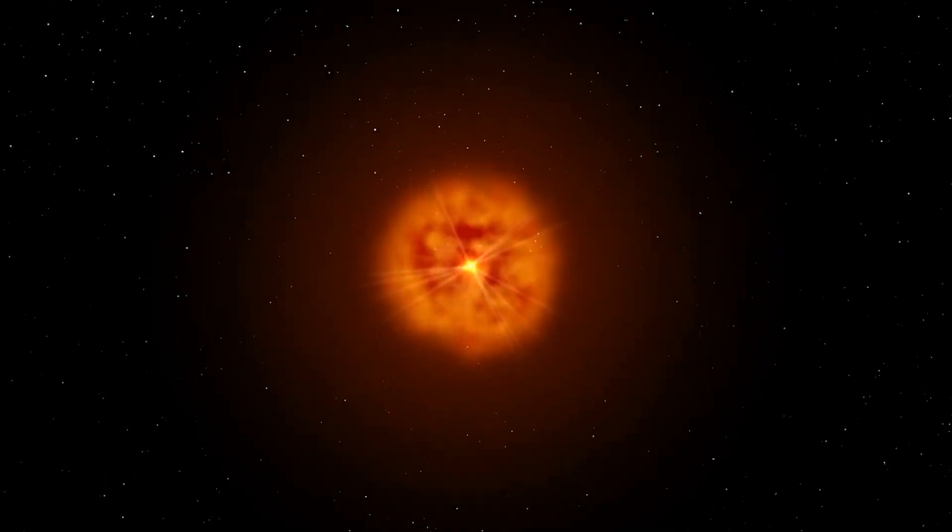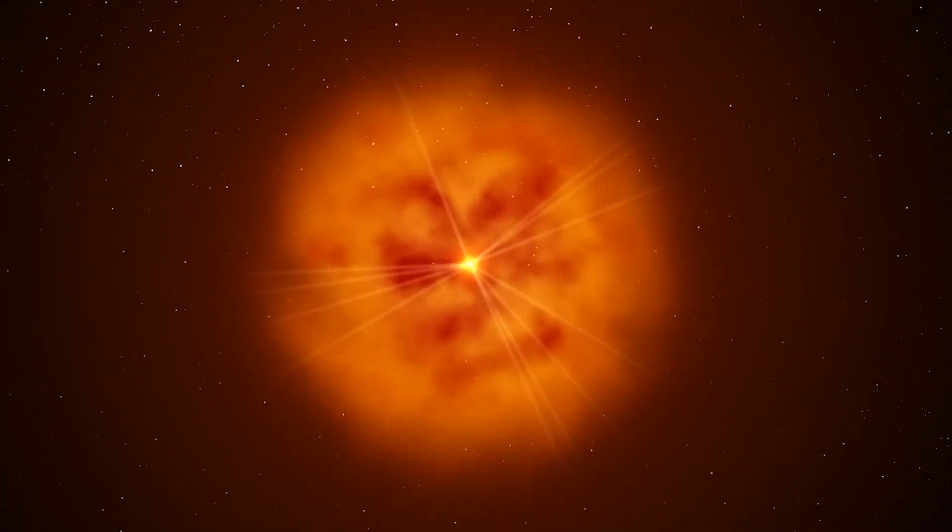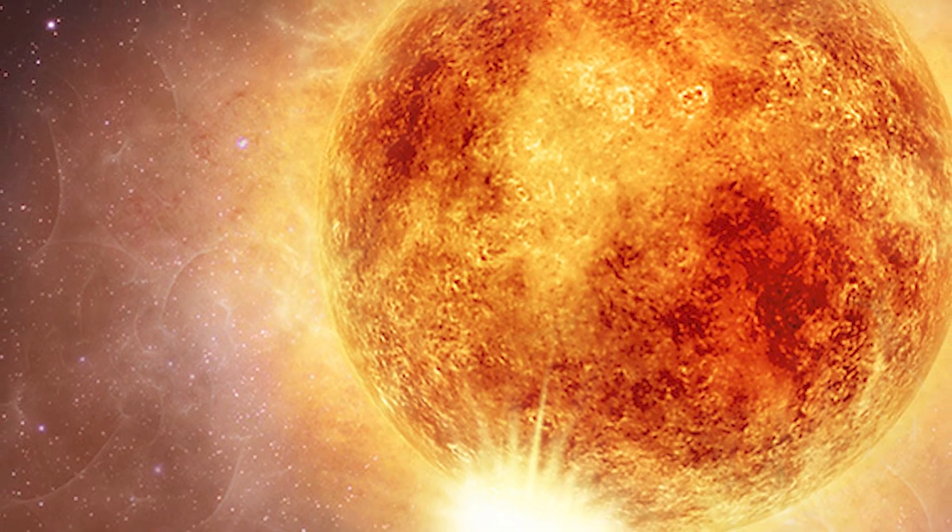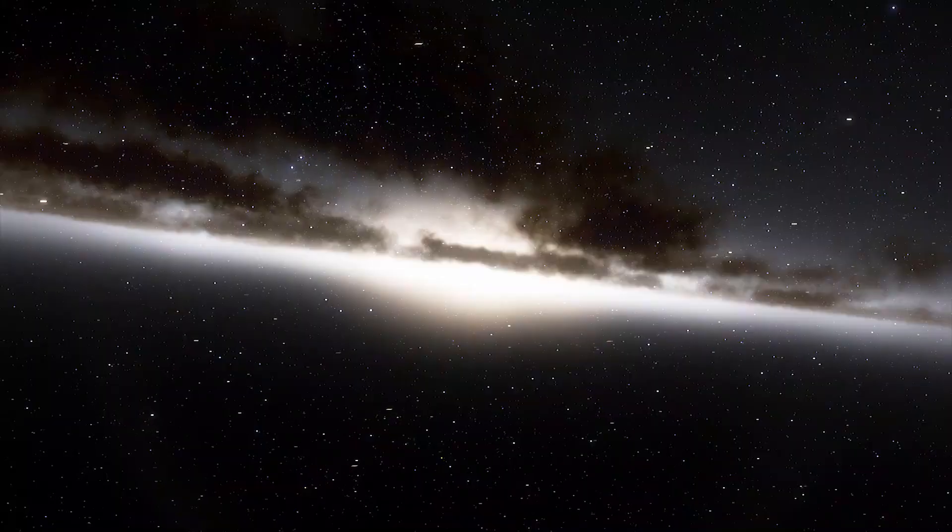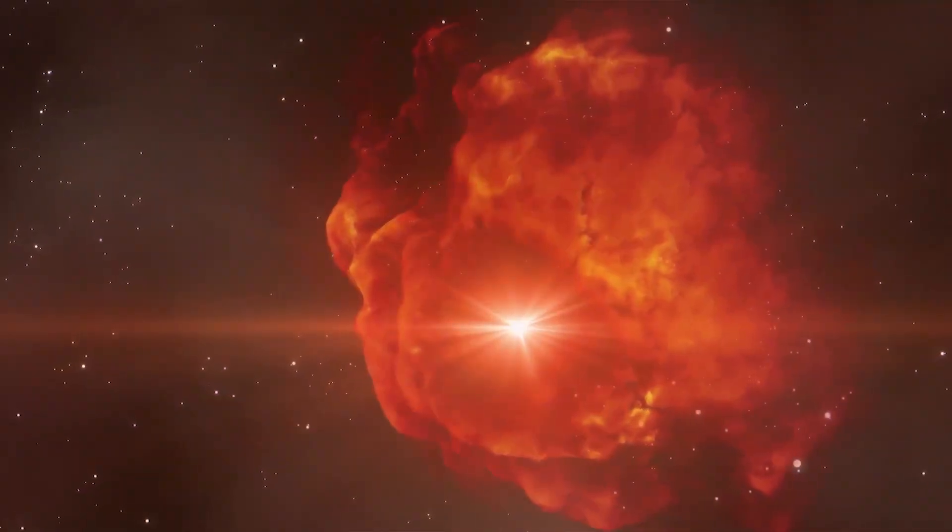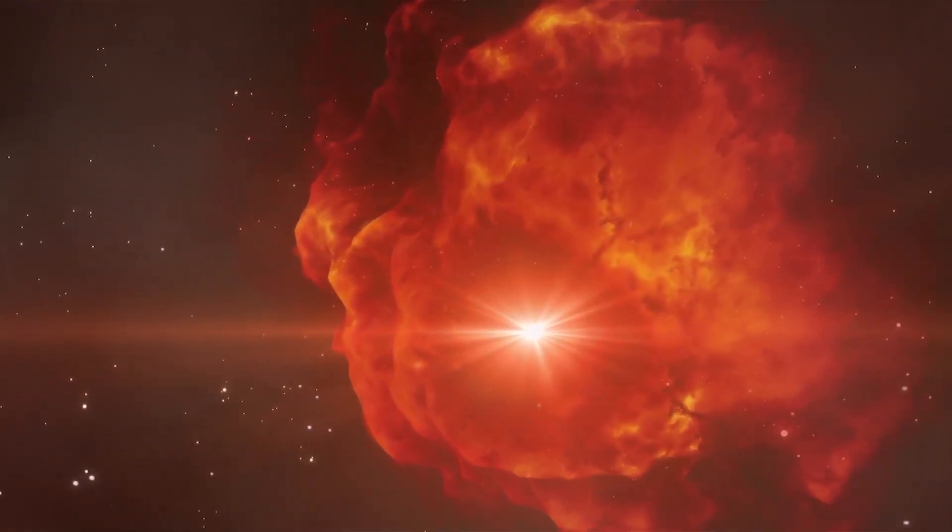Here's what likely happened. Betelgeuse is a very old and very large star. As stars like Betelgeuse age, they go through a lot of turbulent activity. This can include burping out large amounts of gas and dust into space. Think of it like a volcano erupting and sending ash into the sky. In the case of Betelgeuse, the star ejected a huge cloud of dust.